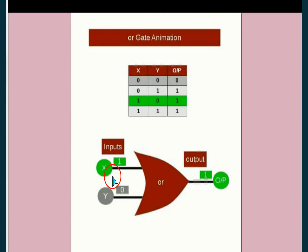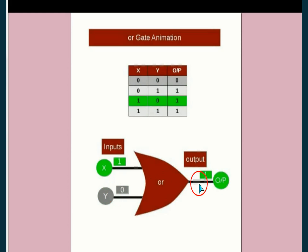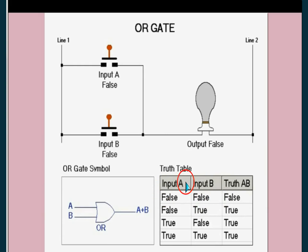This is the OR gate. The logic of the OR gate is: zero-zero is zero, zero-one is zero, zero-one is one, one-zero is one, one-one is one. This is the truth table — false-false means false, false-true means true, true-false means true, true-true means true.